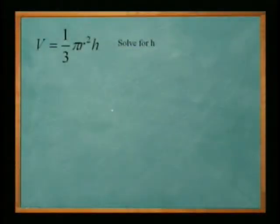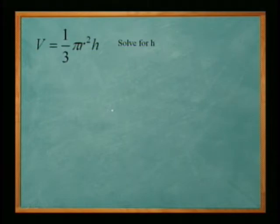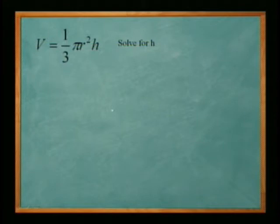In this section we're going to deal with literal equations. What I mean by literal is that the equation deals mostly with variables. We normally solve equations with just one variable, like 2x plus 3 equals 7, solving for x by adding, subtracting, multiplying, or dividing numbers. But in these problems we have mostly other variables that we need to manipulate to isolate one of the variables.